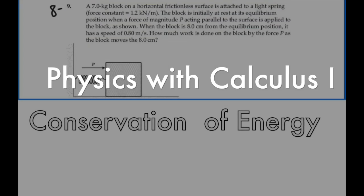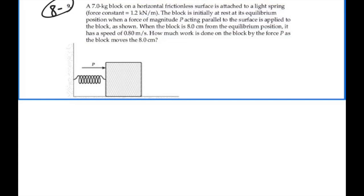Here's problem eight and nine. A seven kilogram block on a horizontal frictionless surface is attached to a light spring, force constant 1.2 kilonewtons per meter. The block is initially at rest at equilibrium position when a force of magnitude P acting parallel to the surface is applied to the block as shown. When the block is eight centimeters from the equilibrium position it has a speed of 0.8 meters per second. How much work is done on the block by the force P as the block moves the eight centimeters?